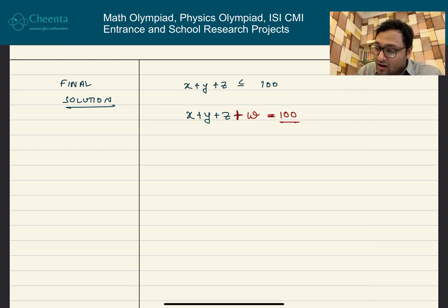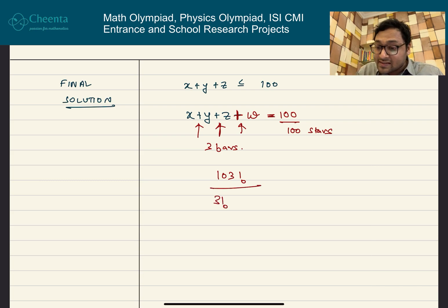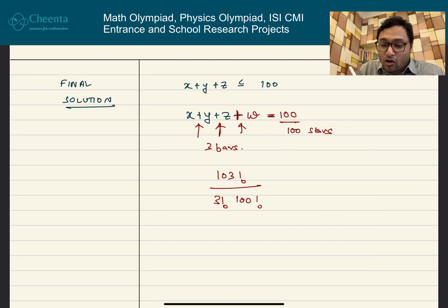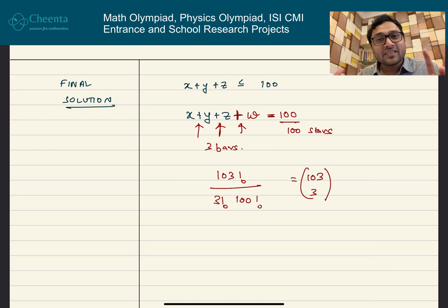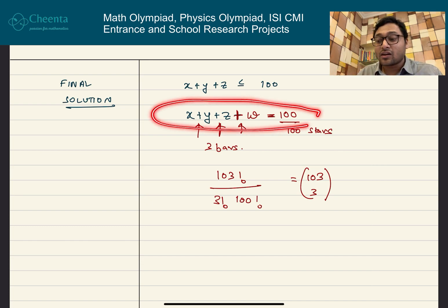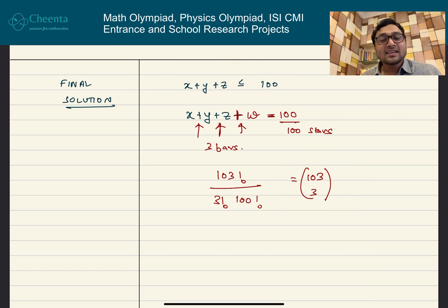The number of non-negative integer solutions to x + y + z + w = 100 is calculated as follows: there are 100 stars and 3 bars — each plus sign acts as a bar. So there are 103 symbols total, giving 103 factorial divided by 3 factorial (for the 3 identical bars) and 100 factorial (for the 100 identical stars), which equals 103 choose 3.